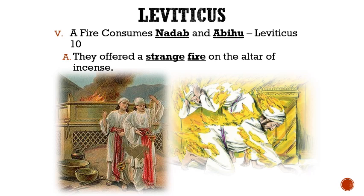Much like with Ananias and Sapphira, God will usually do something drastic to offenders at the beginning of a dispensation or age, to set an example to obey his parameters.